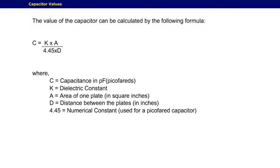The value of the capacitor can be calculated by the following formula: C equals K times A over 4.45 times D. Where C equals the capacitance in picofarads, K equals the dielectric constant, A equals the area of one plate, D equals the distance between the plates, and 4.45 equals the numerical constant.